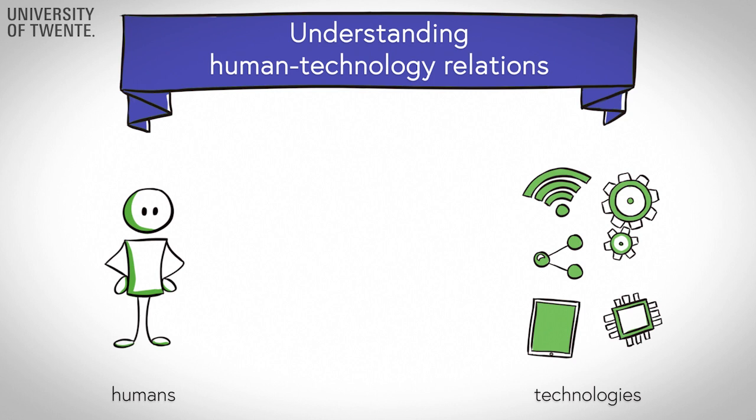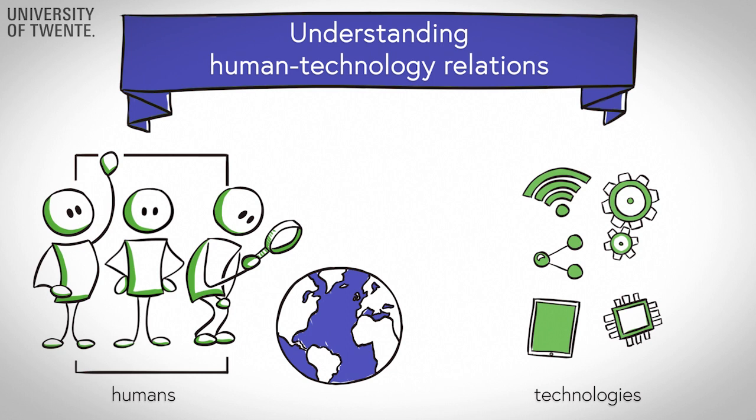How to understand the relations between humans and technologies? It seems obvious to make a radical split between human subjects on the one hand and technological objects on the other. Humans have freedom, intentions, and try to understand the world, while things are mute and passive, objects to be used or studied.